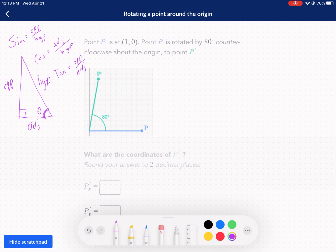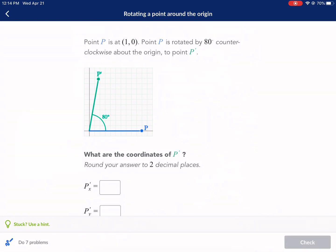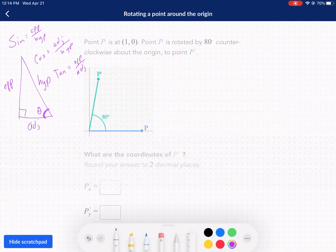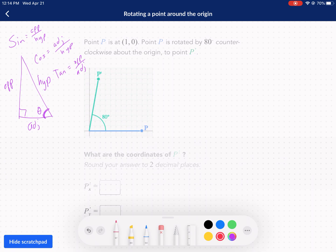So the problem at hand is point P is at (1,0), point P is rotated by 80 degrees counterclockwise, that's a positive rotation about the origin to point P prime. What are the new coordinates of P prime? So rotating here, this is a distance of 1. Now as it rotates, it maintains distance, so this is going to maintain that distance of 1, but what are the coordinates? We don't know the coordinates, that's what we're here to figure out.